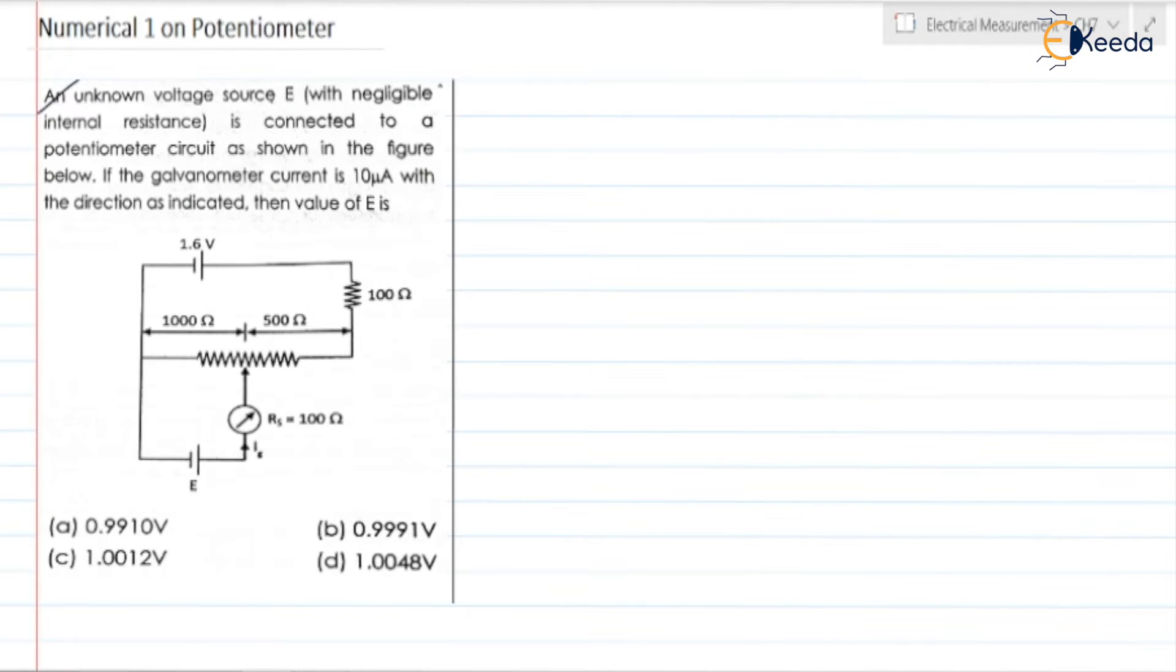An unknown voltage source E with negligible internal resistance is connected to a potentiometer circuit as shown in the figure below. If the galvanometer current is 10 microampere with the direction as indicated, then value of E is, and they have given 4 options.